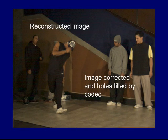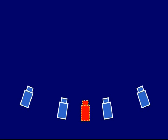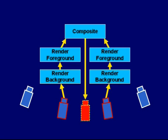To obtain real-time interactivity, the overall decoding scheme is highly optimized for speed. Next, we describe the process of using the GPU to render a novel viewpoint from the compressed data. Given a novel viewpoint, the rendering program determines the two nearest cameras. The data from these two cameras is blended to create the new viewpoint. A block diagram of the rendering process is shown here.